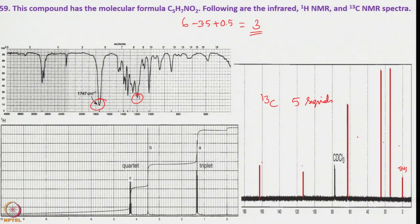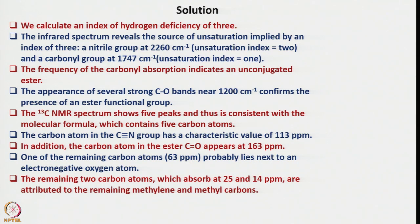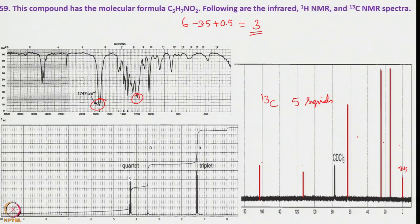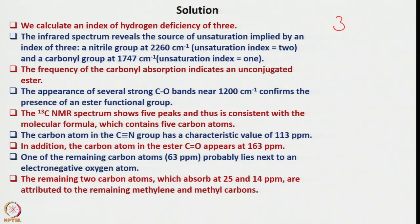The infrared spectrum shows a band around 2260 cm⁻¹ characteristic of a C≡N nitrile group. So we have a carbonyl (ester) and a C≡N nitrile. The nitrile accounts for 2 degrees of unsaturation and the carbonyl for 1, accounting for all 3. The carbonyl absorption frequency at 1747 cm⁻¹ indicates an unconjugated ester (conjugated esters appear below ~1710 cm⁻¹). Strong C–O bands near 1200 cm⁻¹ confirm the presence of an ester group.